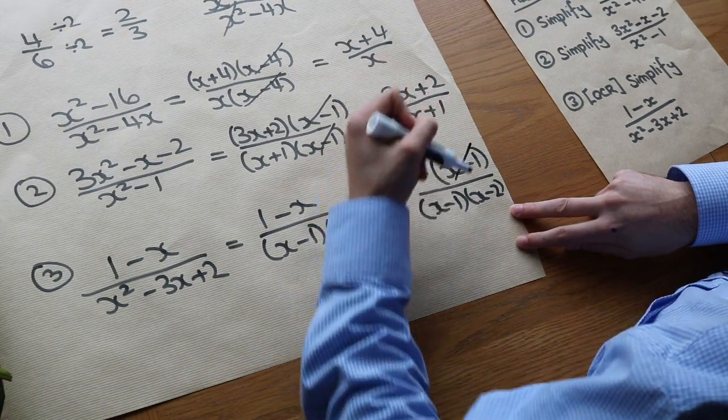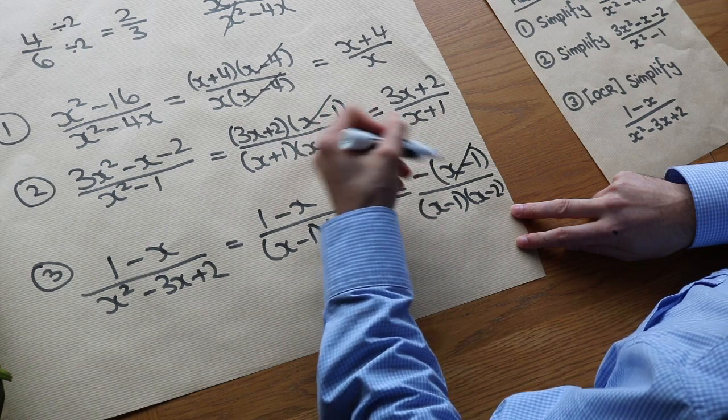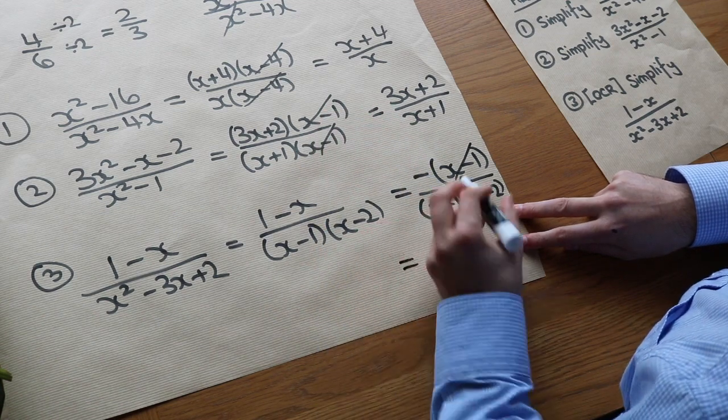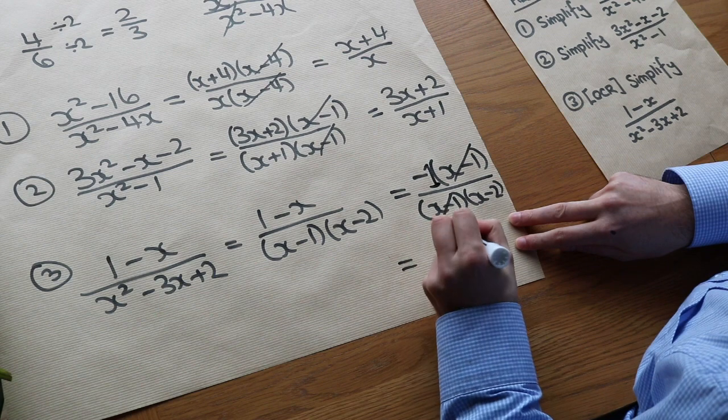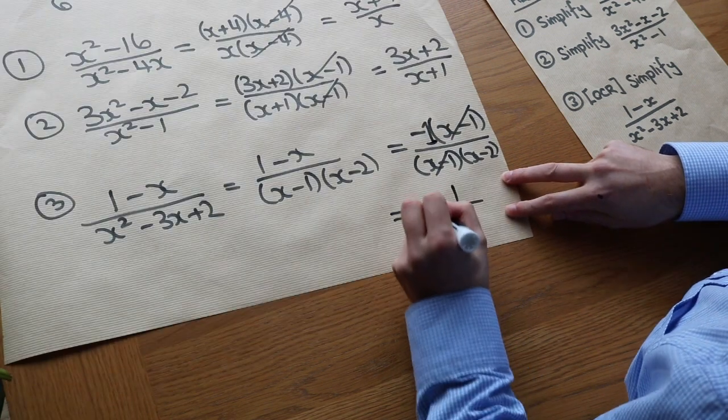And then now you can divide by the x minus 1, and that's just going to leave, well, there's a kind of implicit 1 there, it just leaves minus 1 over x minus 2.